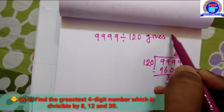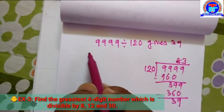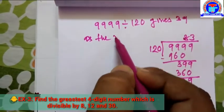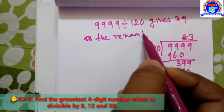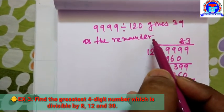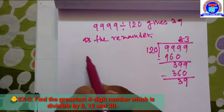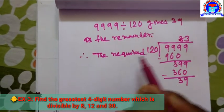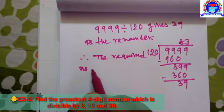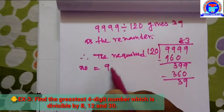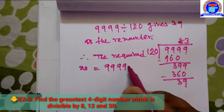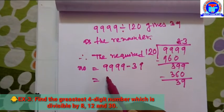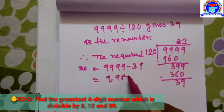This gives 39 as the remainder. Therefore, the required number is equal to 9,999 minus 39. So we get 9,960.